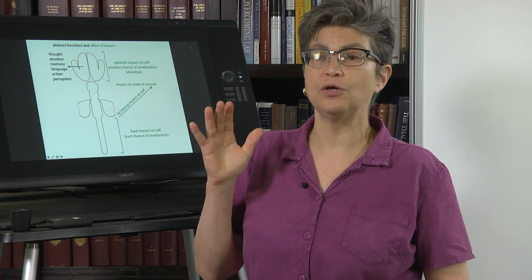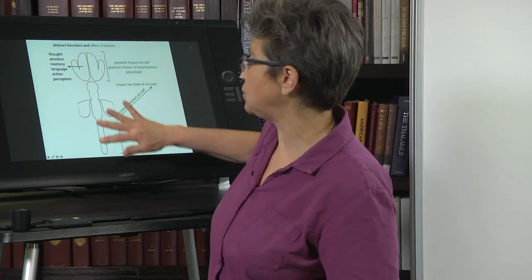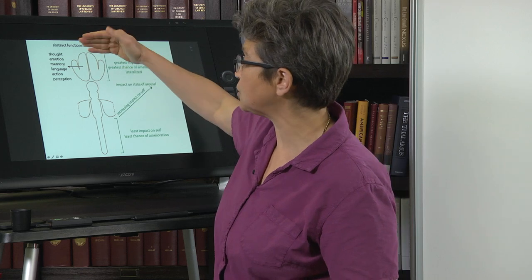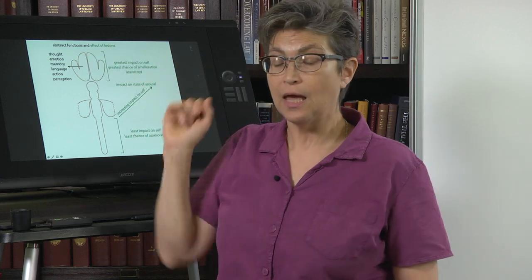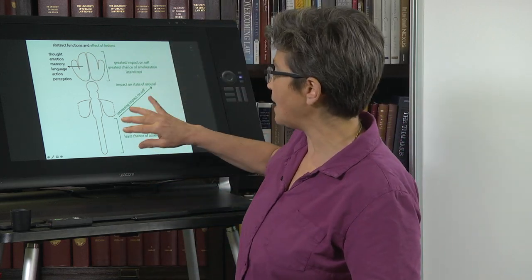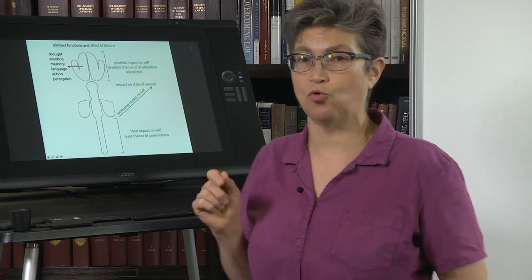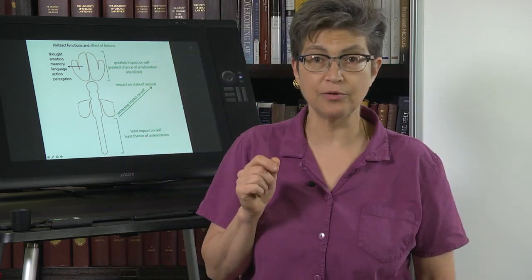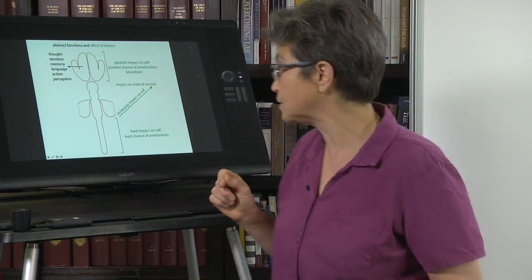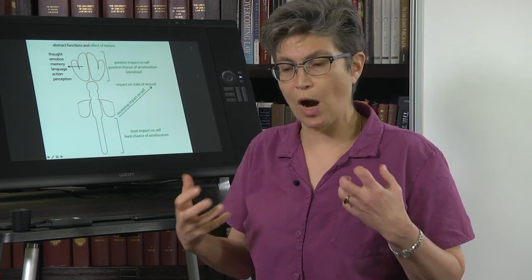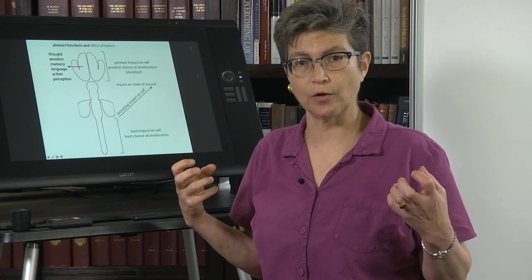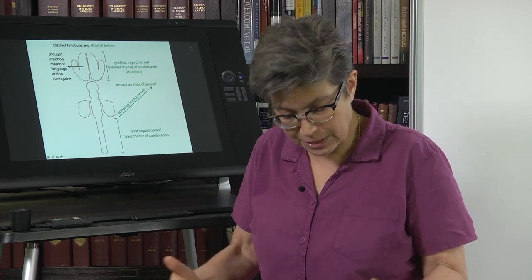Now, what happens if there's a lesion somewhere along this line? We're going to call this the neuraxis — the axis of the central nervous system from the back end to the front end. If you lesion the spinal cord, or for that matter the peripheral nerves, you don't rewire your sense of who you are. You may be very devastated.